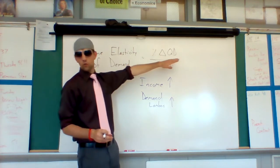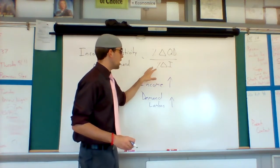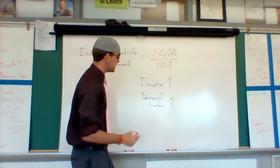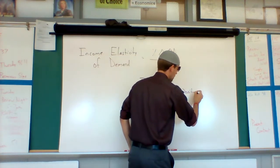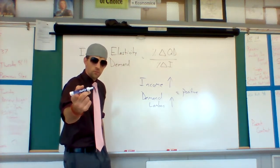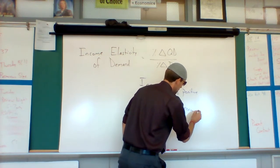So you could know the whole formula Q2 minus Q1 over Q2 plus Q blah blah blah. But you're probably not going to be able to have to do all that math. But if you know they're both going up, then this is going to give you a positive number. And what are goods like Lambos referred to as? They are normal goods.